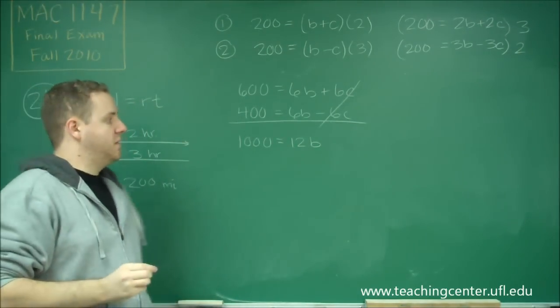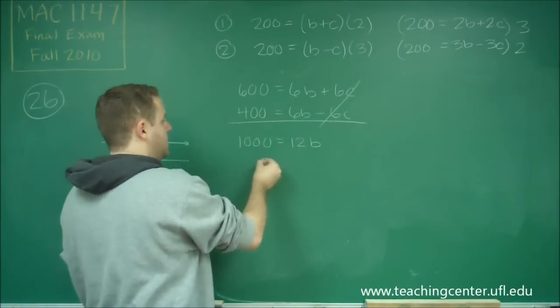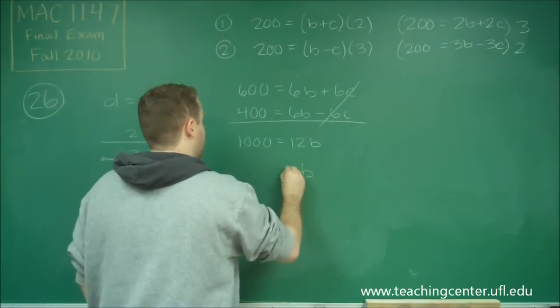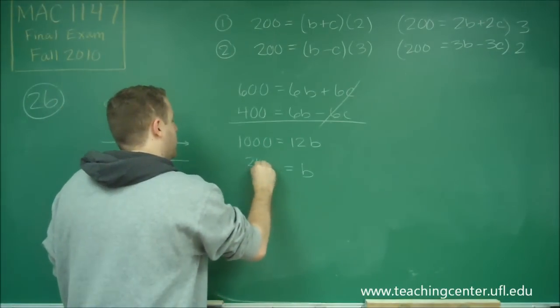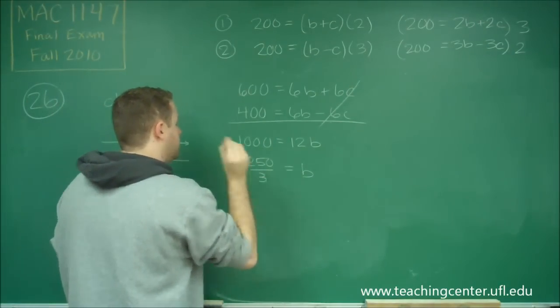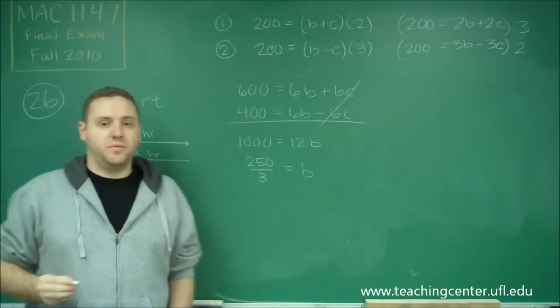So we can find our speed of our boat this way. So if we divide this over, 1,000 divided by 12 would reduce to 250 over 3. And that's not reducible, because 250 is not a multiple of 3.